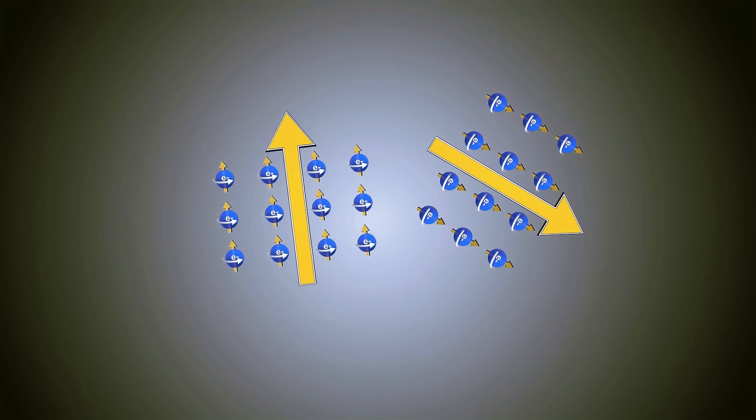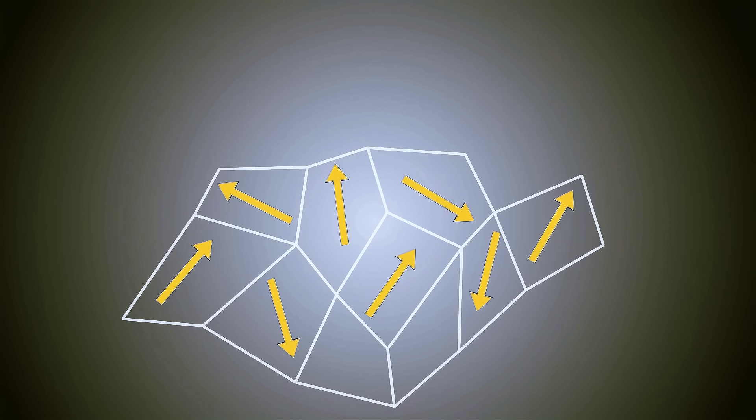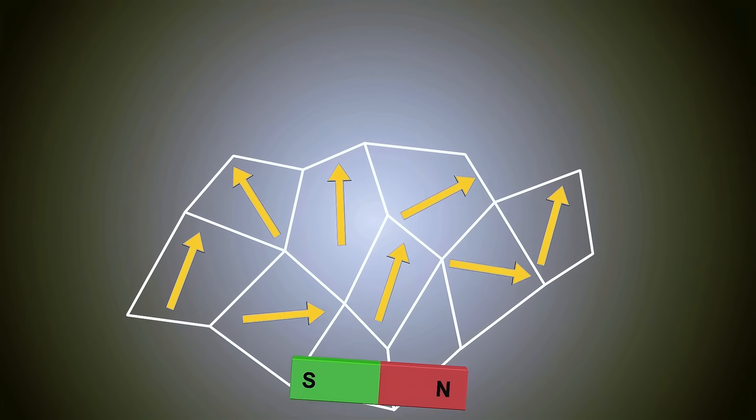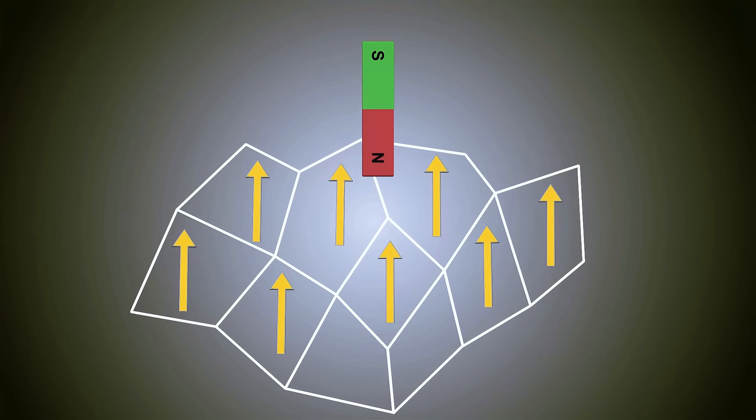Initially, these domains themselves are randomly oriented, cancelling each other out at large scales. So the material overall is not magnetic. But when you magnetize a piece of iron by exposing it to another magnet, or electric current, you force most of these domains to align in the same direction, turning the material now into a magnet. So that's how we create a magnet.